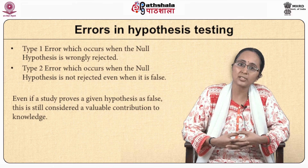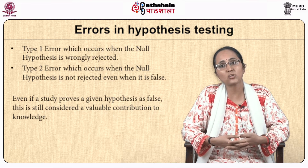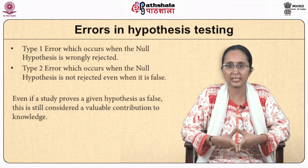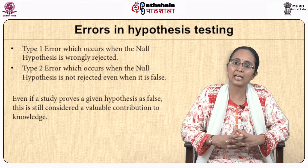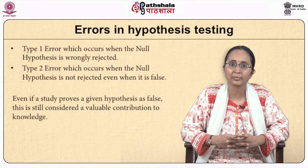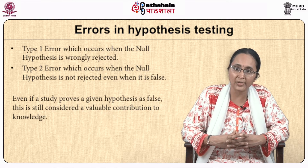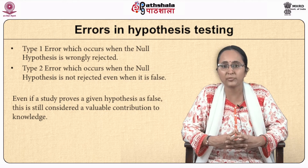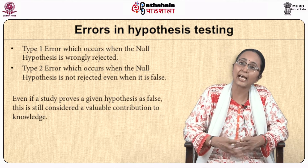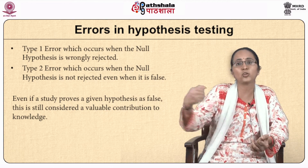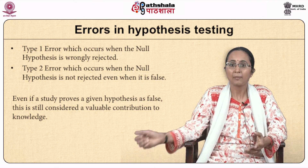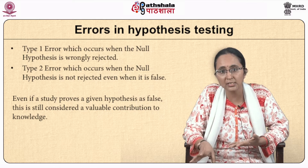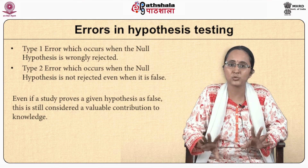Type 2 error occurs when the null hypothesis is not rejected even when it is false. Using the same teacher training example, if the alternative hypothesis is true and increased teacher training does actually lead to an increase in student performance — meaning the null hypothesis should be rejected — but we state that the null hypothesis is not rejected, then we are committing a Type 2 error.